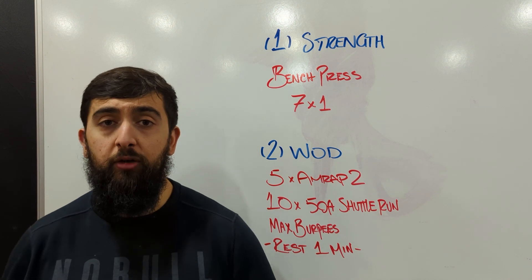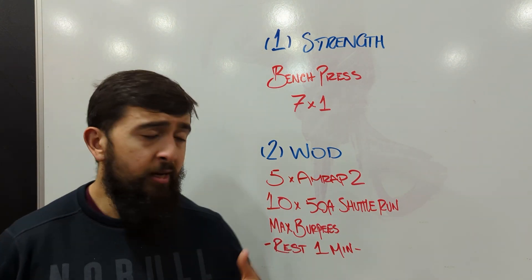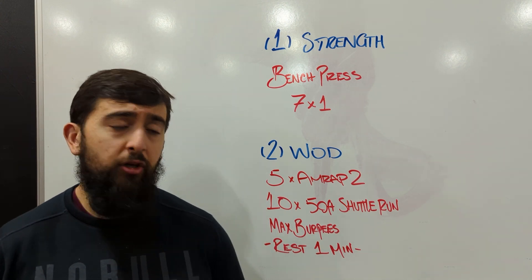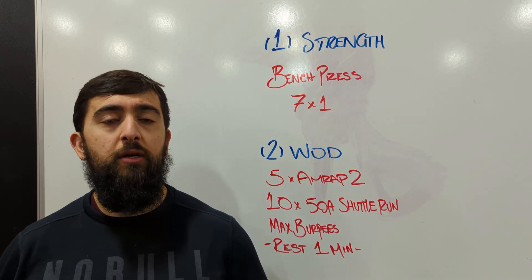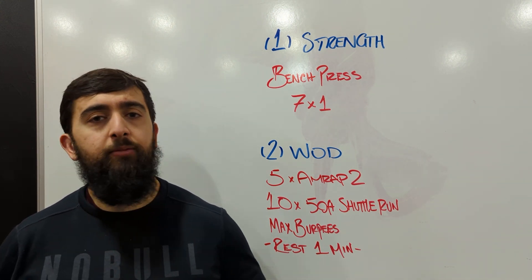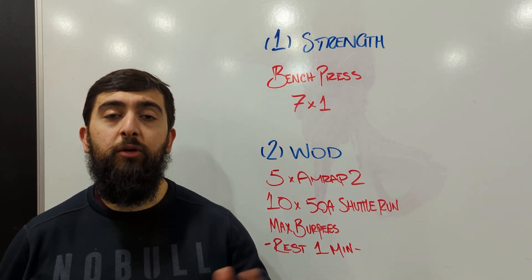For our workout today, we've got some intervals. Five rounds of two-minute intervals. We're going to start off with 10 shuttle runs, 50-foot shuttle runs. And then whatever's remaining in the two minutes, you're going to do max number of burpees. So let's say we've got 30 seconds left, we're going to drop down, do as many burpees as we can until that time expires, and then we're going to rest a minute.